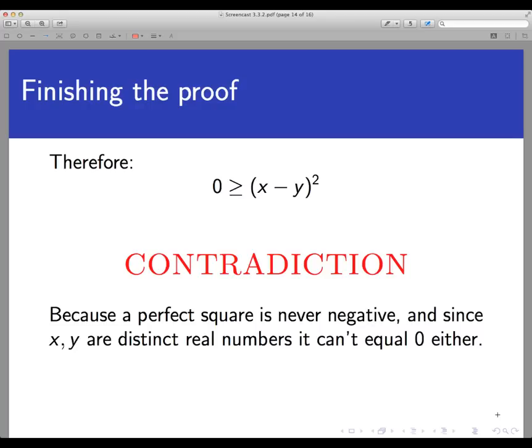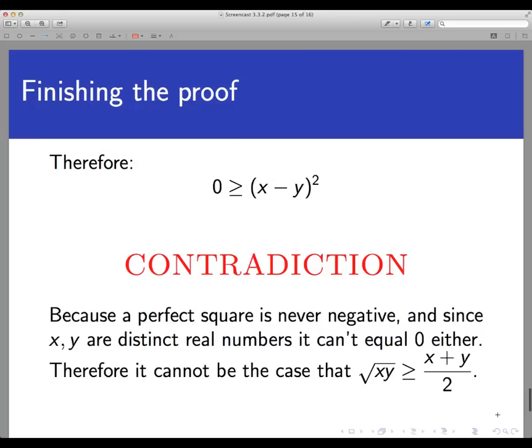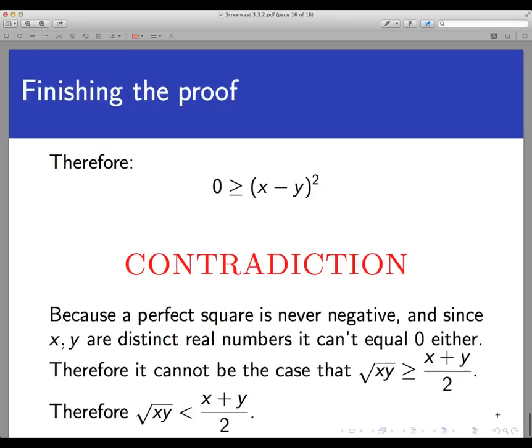So what got us to this impasse? It was the assumption that there are distinct positive real numbers such that square root of XY was greater than or equal to X plus Y over 2. It was by assuming the negation of our statement. That assumption must be wrong. So it must be the case that the negation of the statement is false. And if the negation of the statement is false, it must be the case that the original statement is true. Therefore, square root of XY must be strictly less than X plus Y divided by 2. And that is the end of the proof.